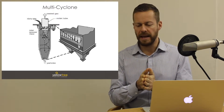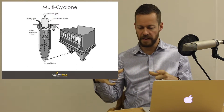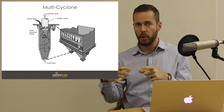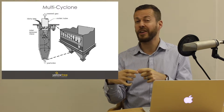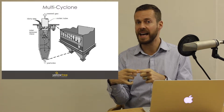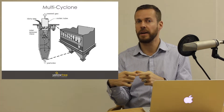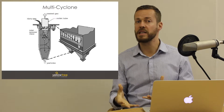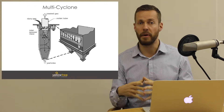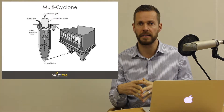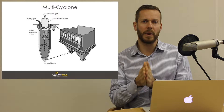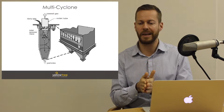So what we learn from that is that if a cyclone can be made smaller, we can increase the centrifugal forces inside it. More centrifugal force means better separation of the particles. And for that reason, we have multicyclones.